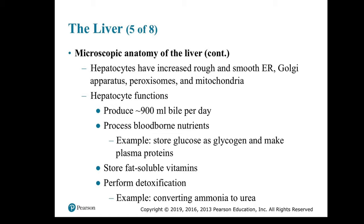Hepatocyte functions: they produce about 900 mL of bile per day, process blood-borne nutrients (storing glucose as glycogen and making plasma proteins), store fat-soluble vitamins, and perform detoxification — for example, converting ammonia (more toxic) to urea, which can be easily eliminated by the kidneys.